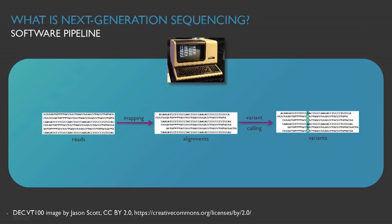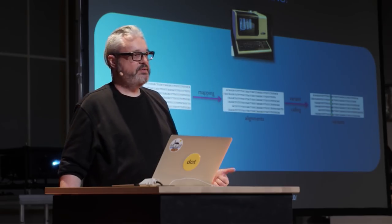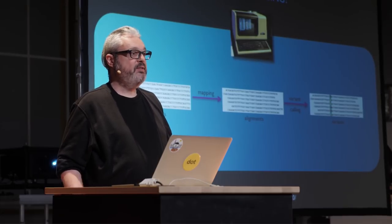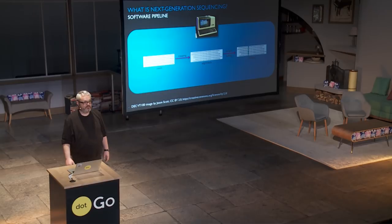There are many kinds of different pipelines that you may want to run over these fragments, but a typical one is variant calling, which is quite often used. Variant calling first does a process called mapping, where it tries to puzzle together the original DNA sequence out of these fragments, and then after some sorting and additional steps, the second phase is called variant calling, where you try to figure out which parts of the DNA are different from that of a normal DNA.